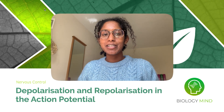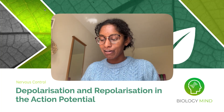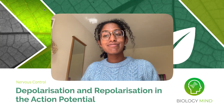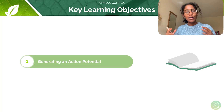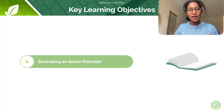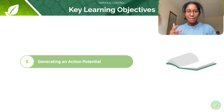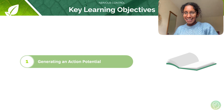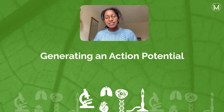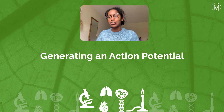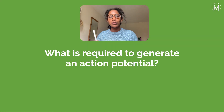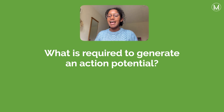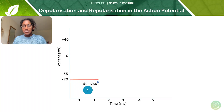Welcome to this A-level Biology tutorial on depolarisation and repolarisation in the action potential. This is a recap of what we covered in our last tutorial, bringing into context how we go from our resting potential to depolarising our membrane and then repolarising it again. What is required to generate an action potential? The answer is a stimulus.